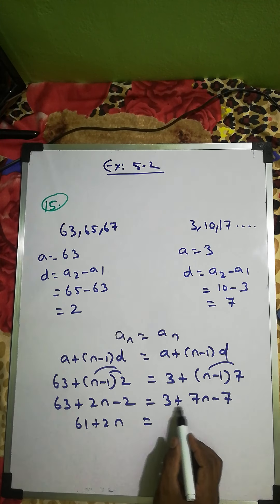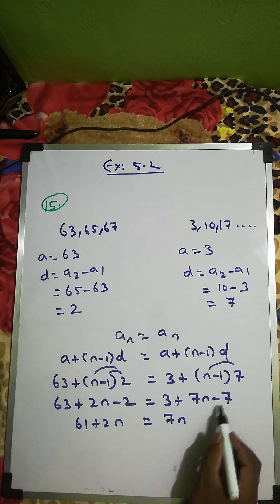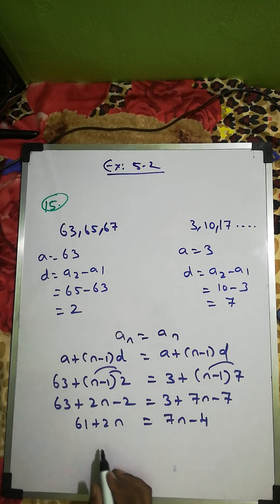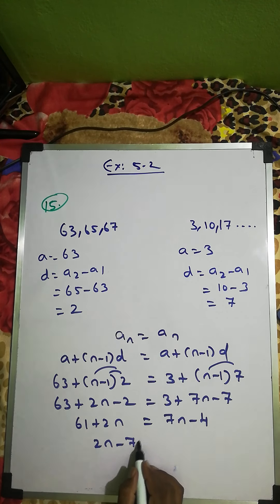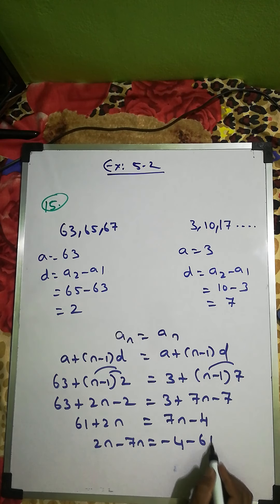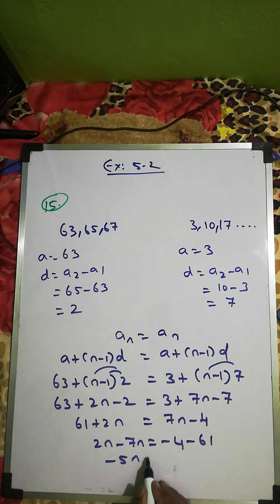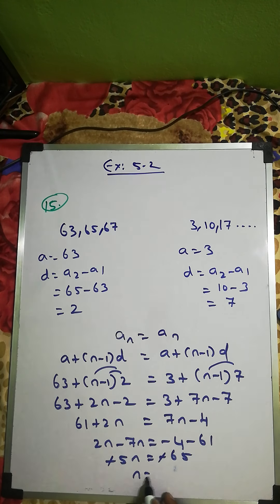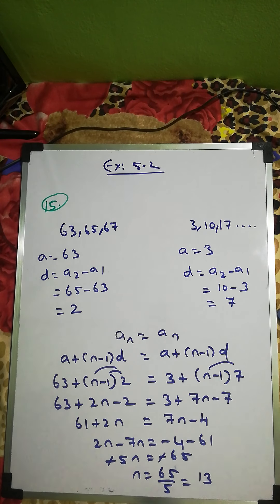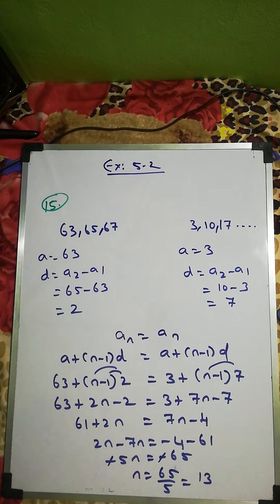Rearranging: 2n - 7n = -4 - 61, so -5n = -65. The negatives cancel, giving n = 65/5 = 13. Therefore, the 13th term of both APs is equal.